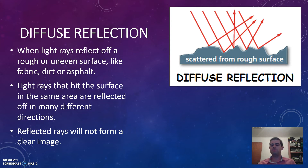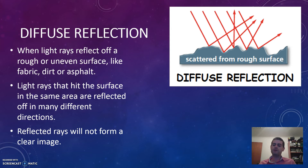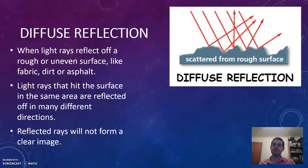For example, if you shine a torch at a mirror — specular reflection — you can see light coming off and also see the image of the torch in the mirror. But if you do the same thing with a white t-shirt in a dark room, you'll see light reflecting off it but you won't see the image of the torch, because the t-shirt has scattered the light in a whole bunch of different directions so it no longer forms a clear image. That's diffuse reflection in action.